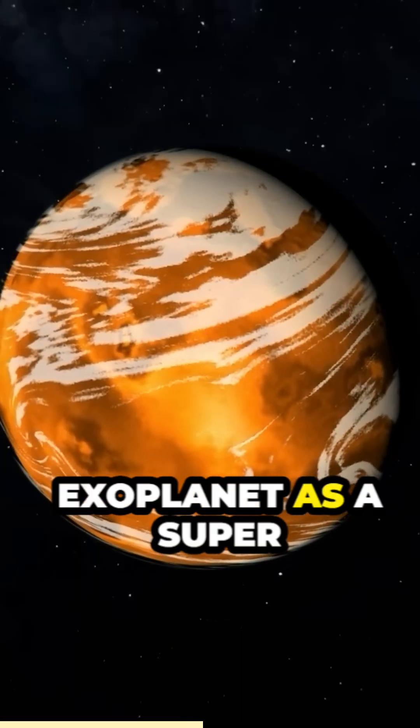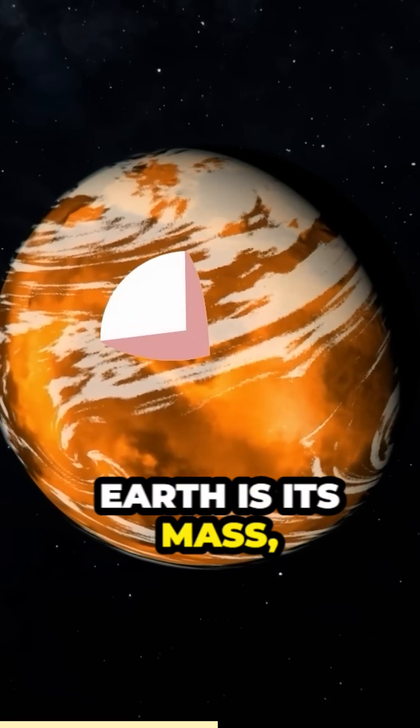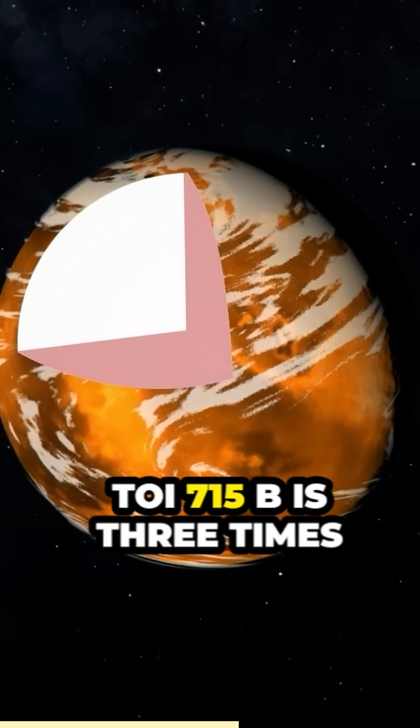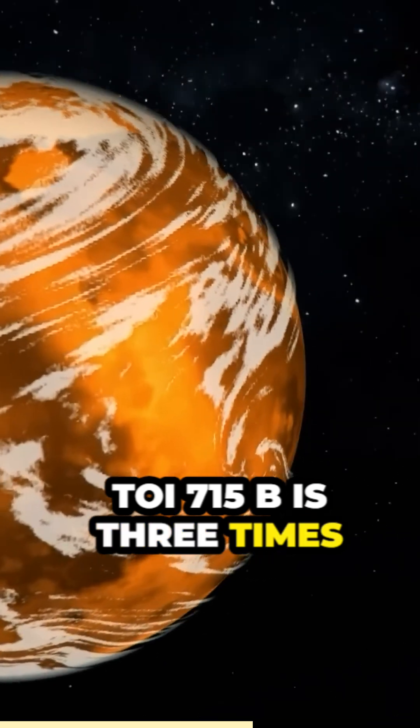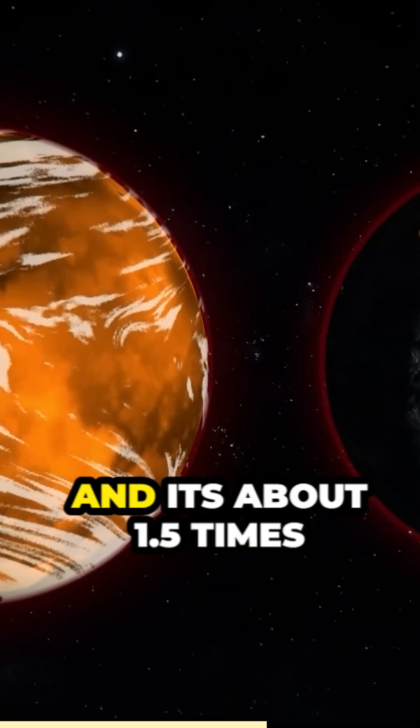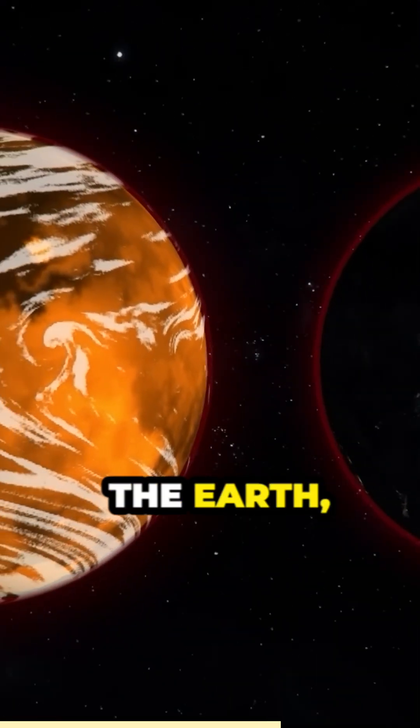What defines an exoplanet as a super-Earth is its mass, which has to surpass that of Earth. TOI 715 b is three times as massive as our planet, and it's about 1.5 times the Earth radius.